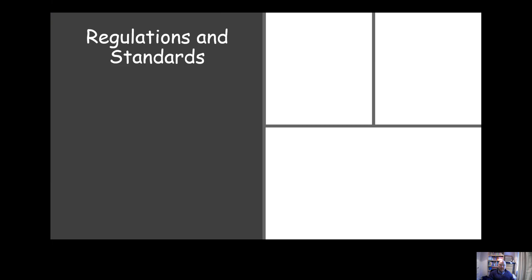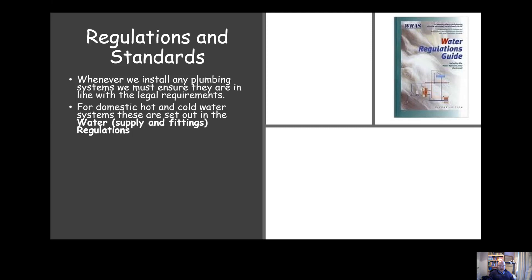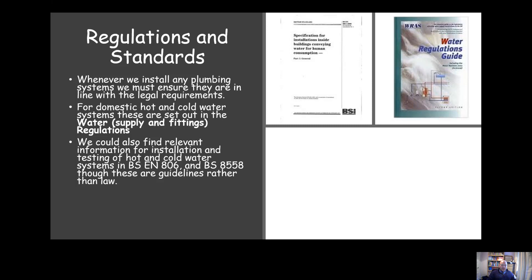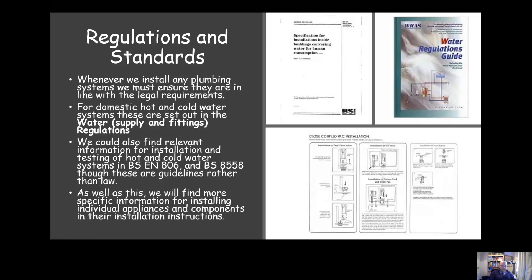Whenever we install any plumbing systems, they must meet the legal requirements. The legal requirements are set out in the Water Supply and Fittings Regulations. This guide to the water regulations is fantastic in terms of the information it gives us — it explains the regulations very well. We can also use British Standards BS EN 806 and the supplementary guidance BS 8558, which give us a lot of information on hot and cold water systems.